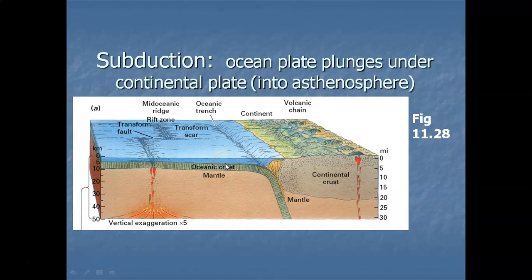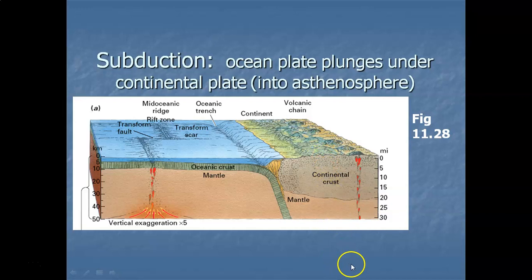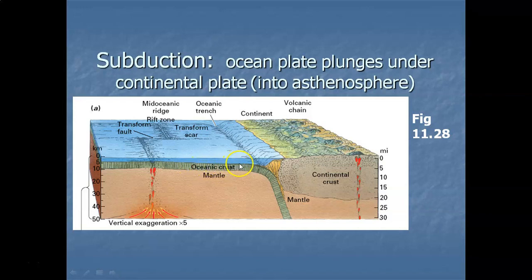In the process of subduction, you have a dense and thinner ocean plate — made of dense basalt — encountering a much thicker continental plate. The ocean crust is thinner, while the continental plate is thicker with its continental crust and lithosphere. The rock of the continents is less dense because of sedimentary rock compared to very dense basalt. So the leading edge of the ocean plate is literally forced to plunge beneath the continent.